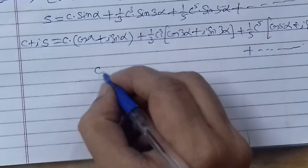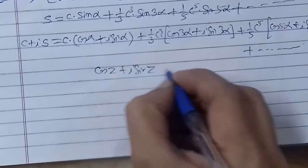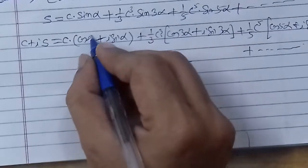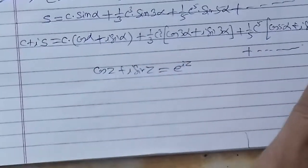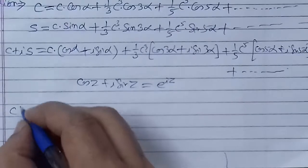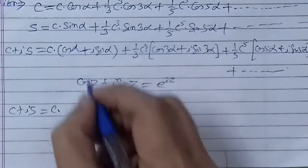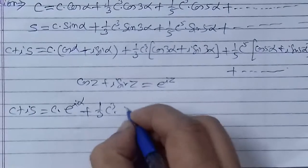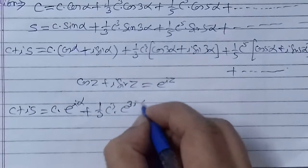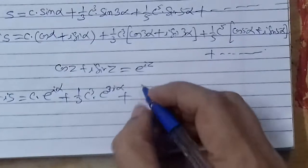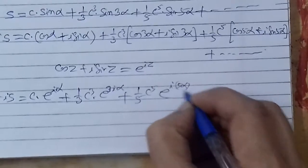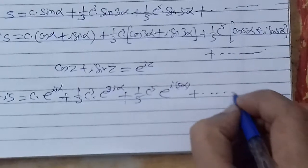Now we apply Euler's formula. We know that cos z + i sin z = e^(iz). So here z is α for the first term, 3α for the second, 5α for the next, and so on. Applying Euler's formula to each term: C + iS = Ce^(iα) + (1/3)C³ e^(3iα) + (1/5)C⁵ e^(5iα) + ... and so on.